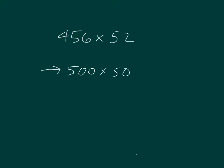So I have 500 times 50. That's also equal to 500 times 5 tens, which equals 25 thousands.